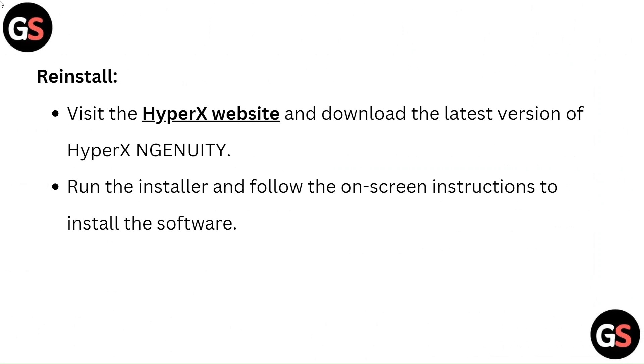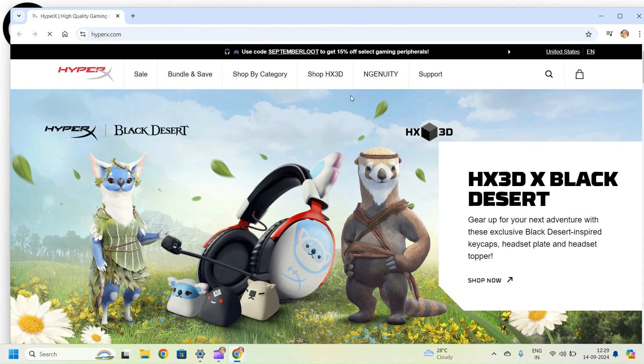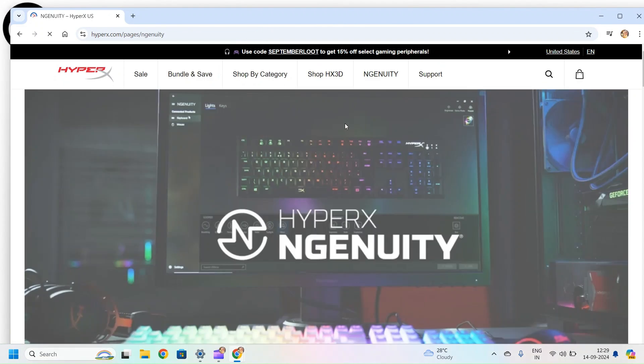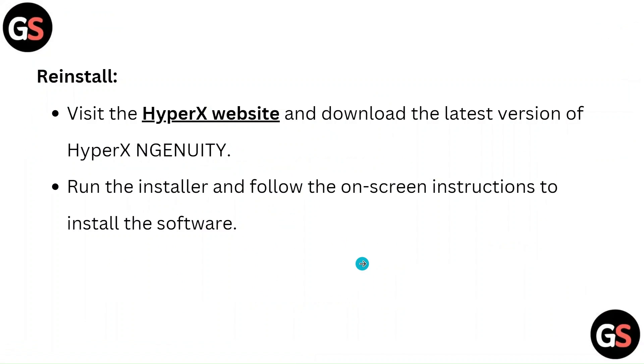To reinstall, visit the HyperX website and download the latest version of HyperX NGUnity. Run the installer and follow the on-screen instructions to install the software.